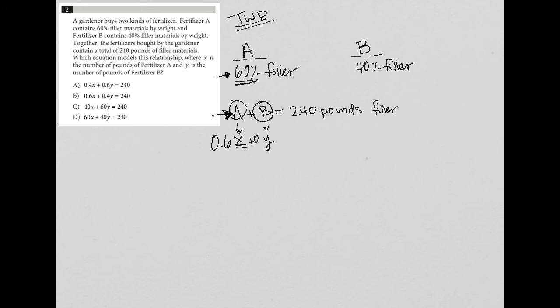And then 40% of Y, 40% of fertilizer B is filler. So 0.4 times Y is the amount of filler in fertilizer B.